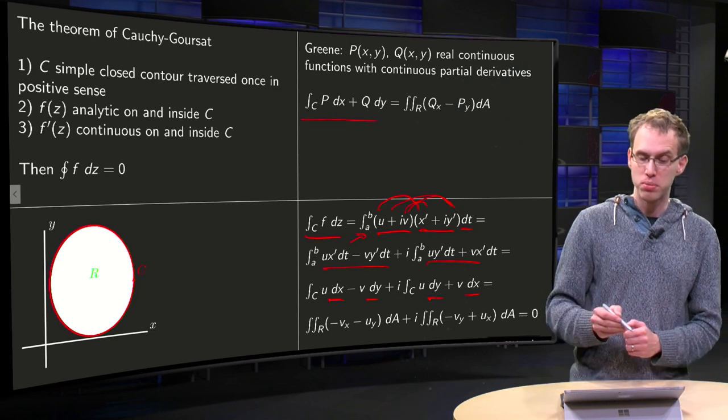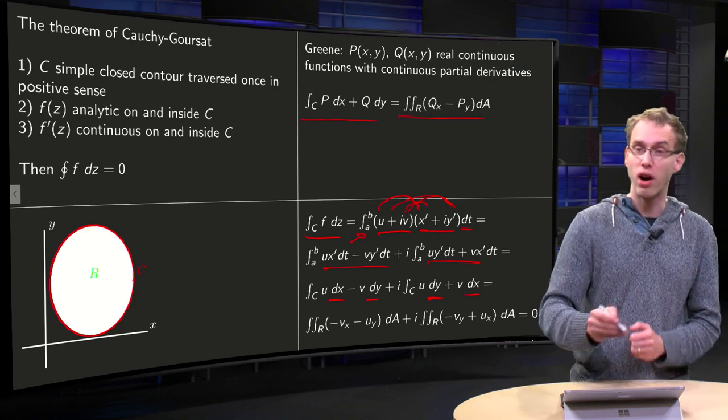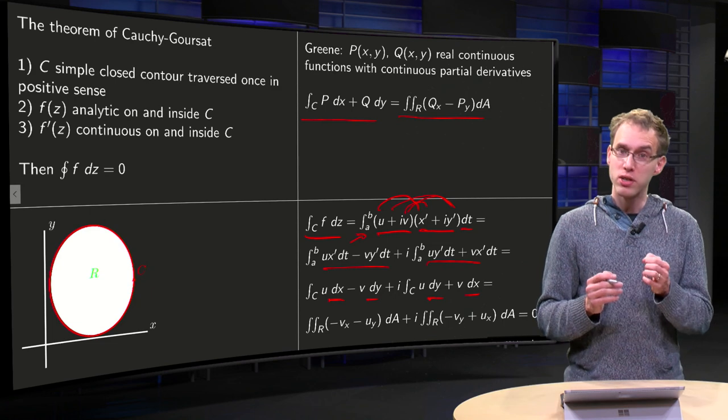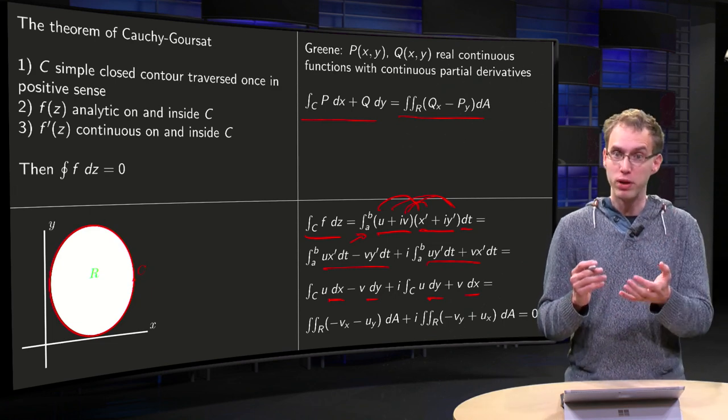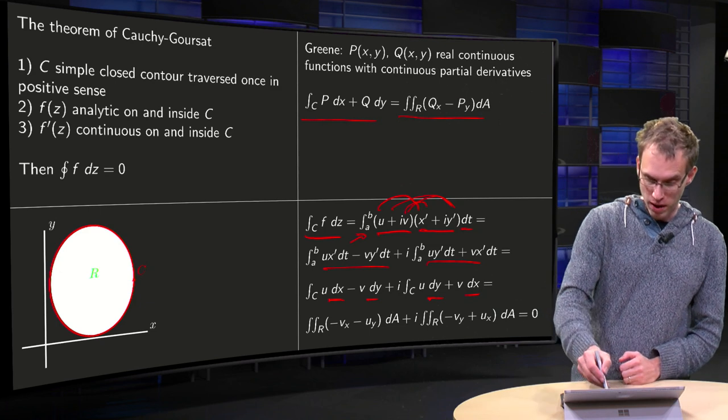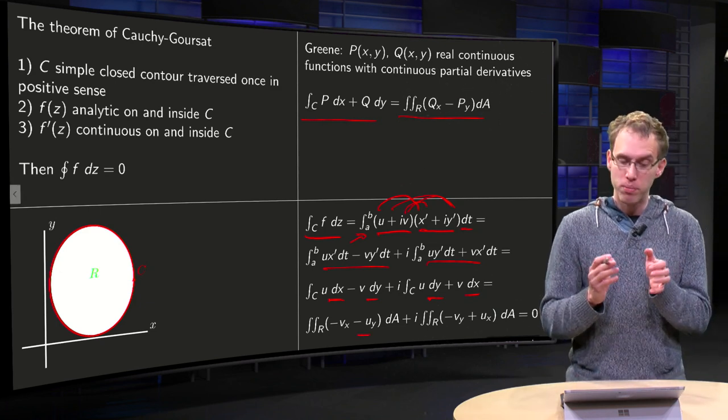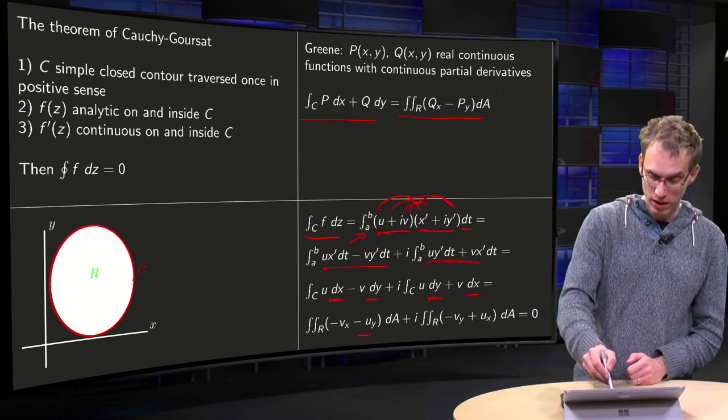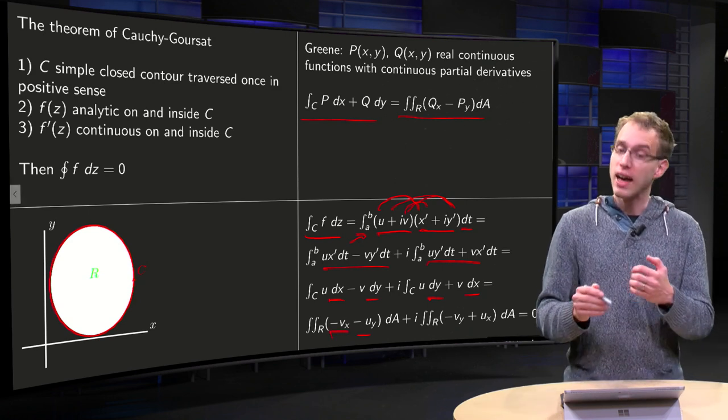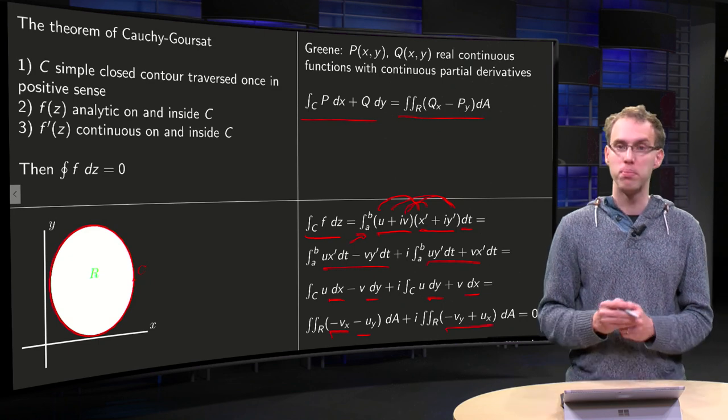Integral along C, P dx plus Q dy equals integral along R, Q_x minus P_y. In the first case we have U dx, so our P will be U. So, we get a minus U_y. And we have a minus V dy, so our Q will be minus V. So, we get a minus V_x over here. And similarly for the imaginary part.